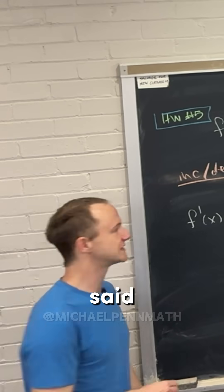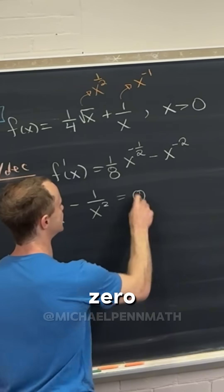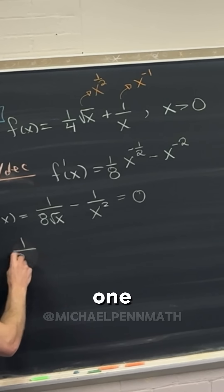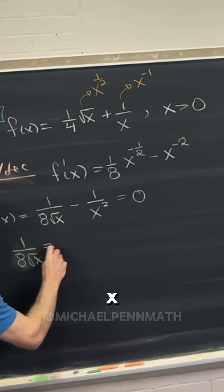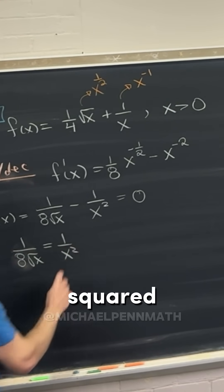Okay, so we got something like that. And like I said, we want to find out where that is equal to zero. So let's see, we can move some stuff around. We'll have 1 over 8 times the square root of x equals 1 over x squared.